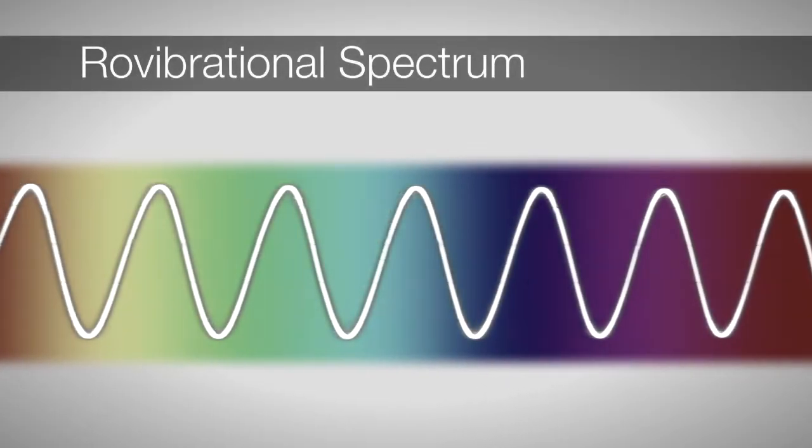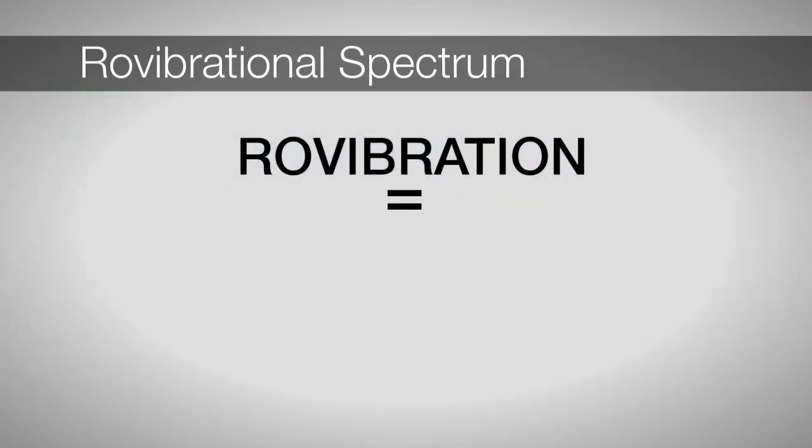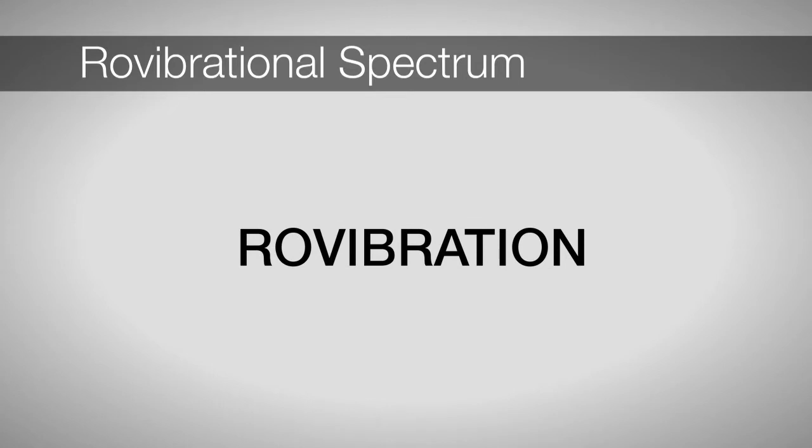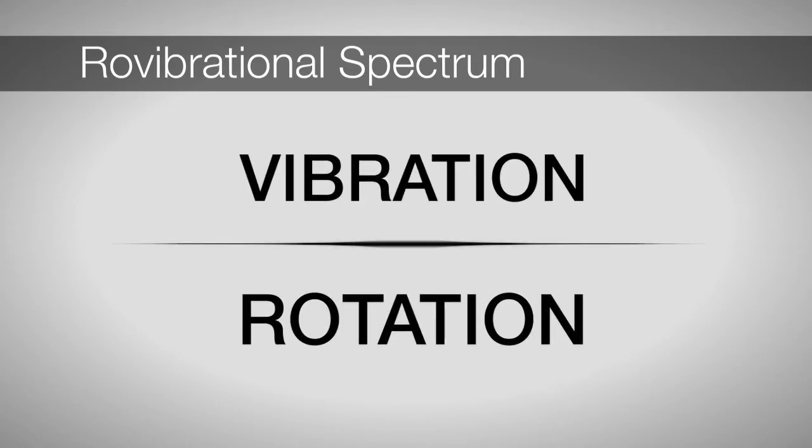The rovibrational spectrum of a molecule contains information about the vibrational and rotational levels of the molecule. Even though both rotations and vibrations will be observed simultaneously, we can simplify our analysis by first treating these motions independently.